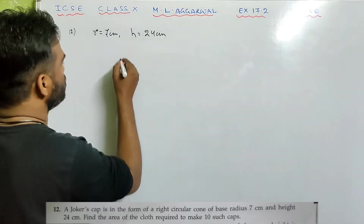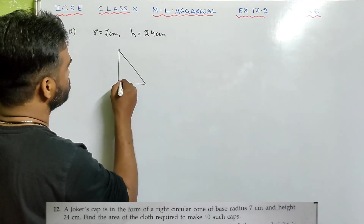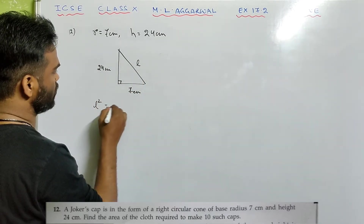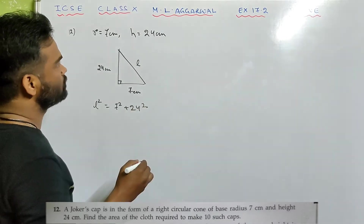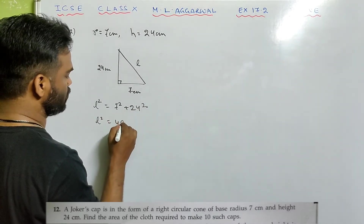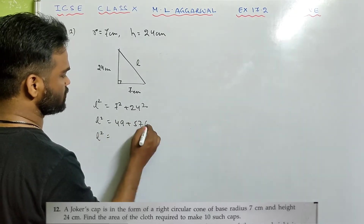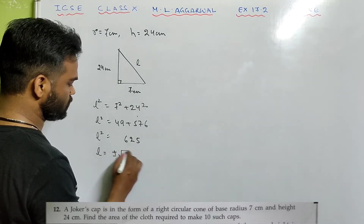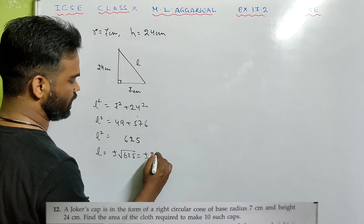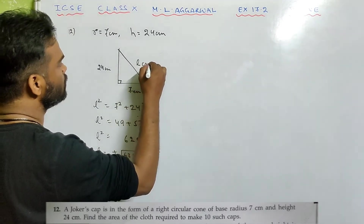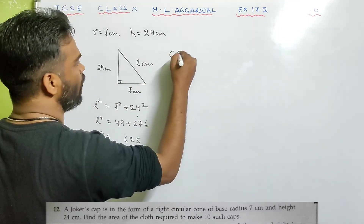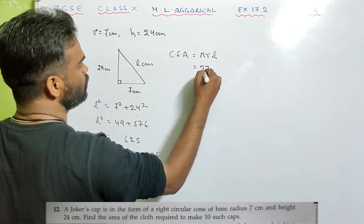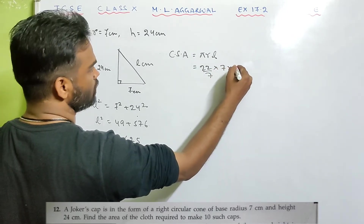First, find the slant height using Pythagoras: l² = 7² + 24² = 49 + 576 = 625. So l = ±25, taking positive value l = 25 centimeter. Now CSA of 1 cap = pi r l = 22/7 × 7 × 25.